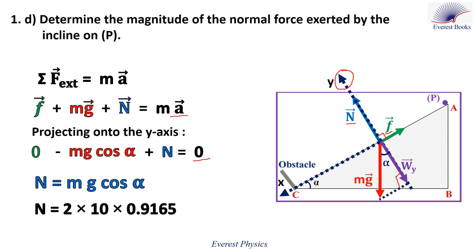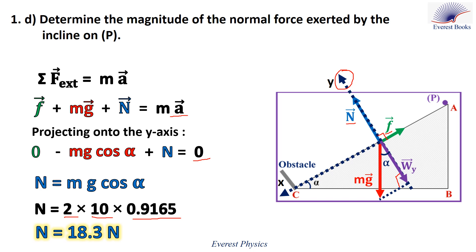Replace each physical quantity by its value: M equals 2, g equals 10, and cosine alpha equals 0.9165. Therefore, N equals 18.3 newtons.